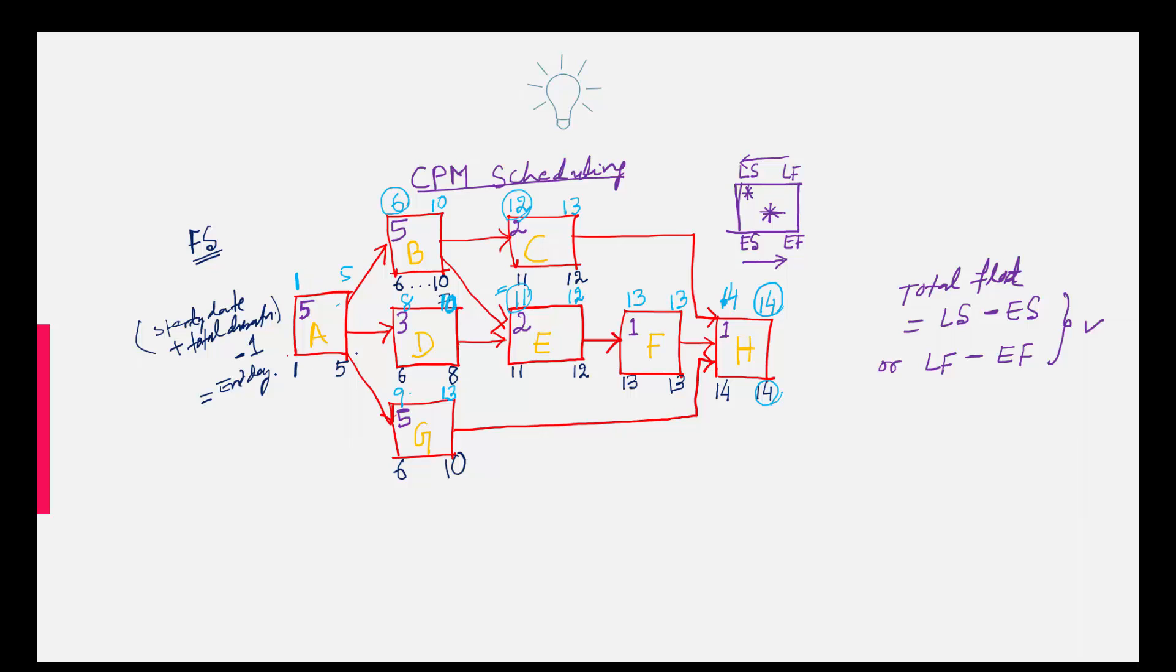So this total float for this particular activity is 1 minus 1 is 0 or 5 minus 5 is 0. So this is 0. What about this? So 6 minus 6, late finish and early start you can deduct or late finish and early finish you can deduct. Here you can see this and here also it is 0.